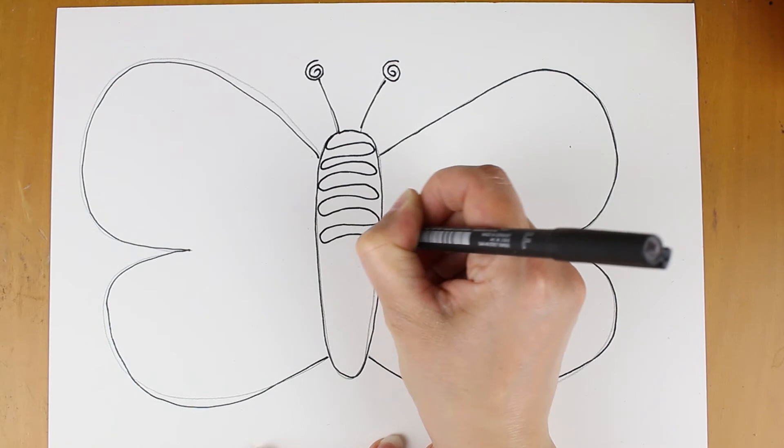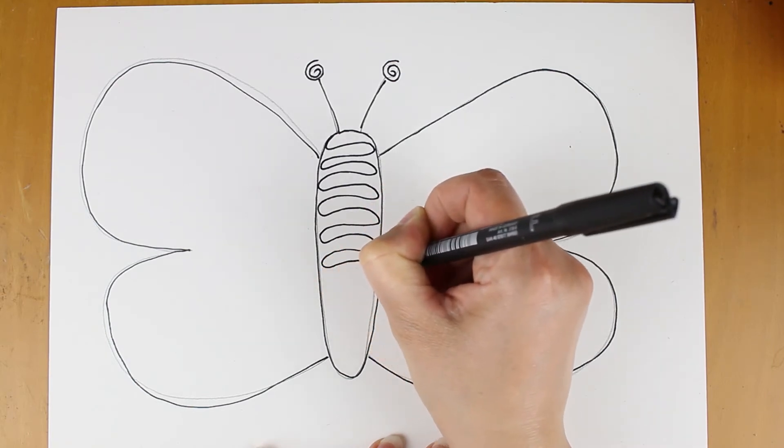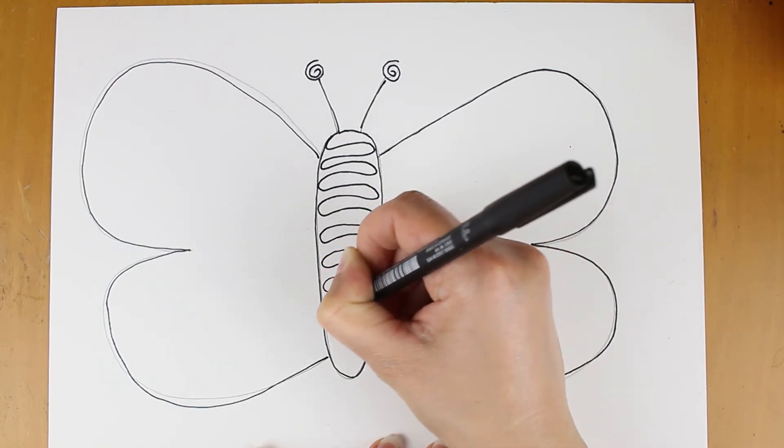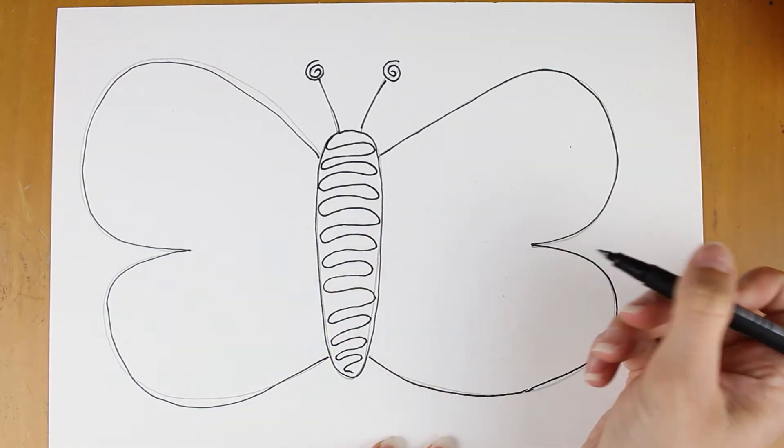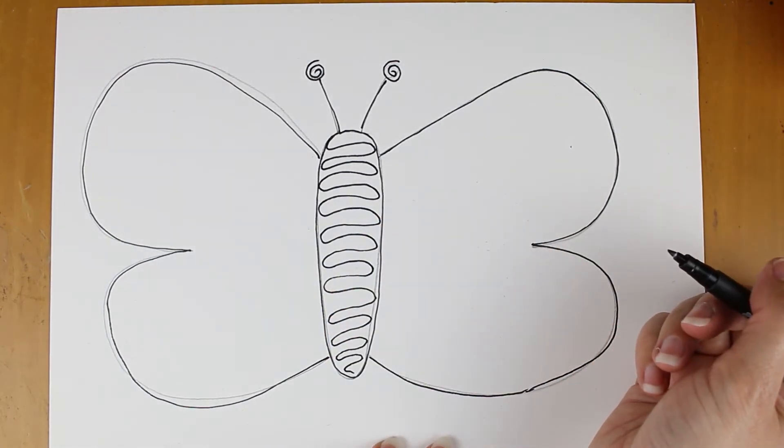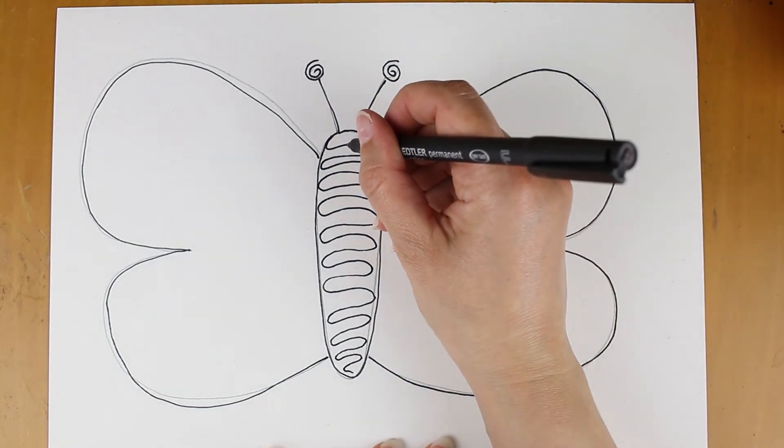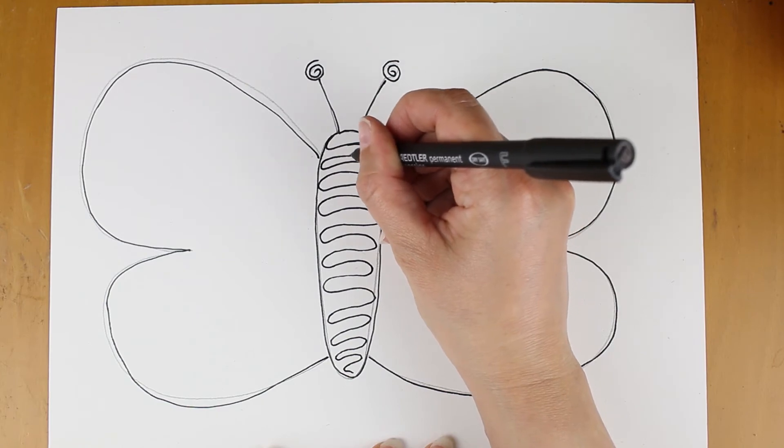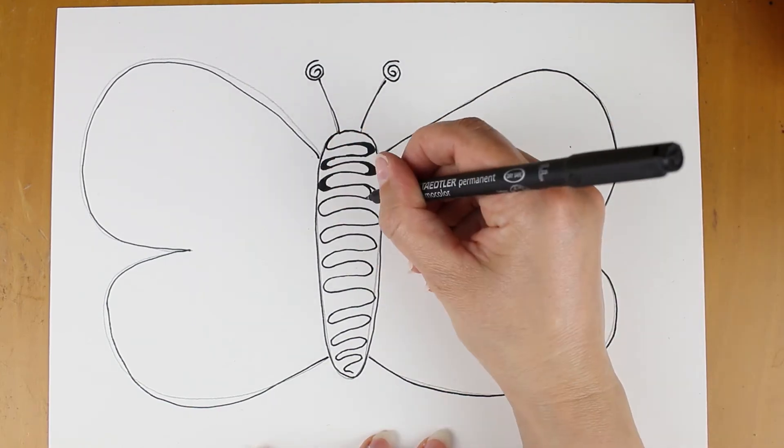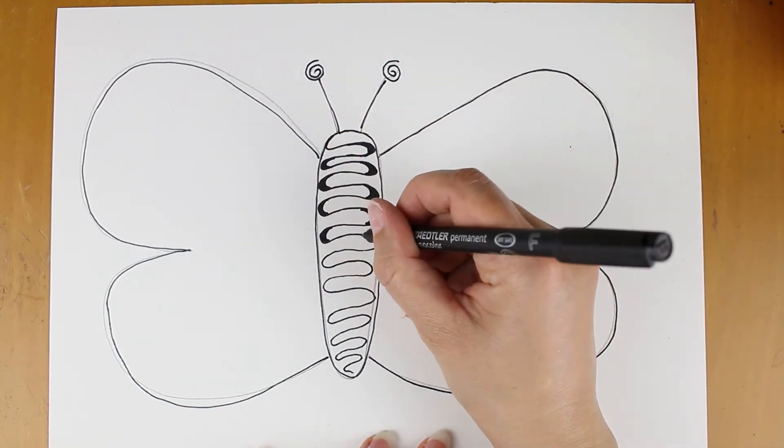One thing to remember when you're using pen is it looks really interesting if you can use different thickness of lines. So for example, I've used a thin line all the way down, so I'm now going to add little bits of thicker line all the way down the pattern. I've done it on the edges where it curves round. I've made that bit a little bit thicker, and you can see already it looks a lot more interesting.